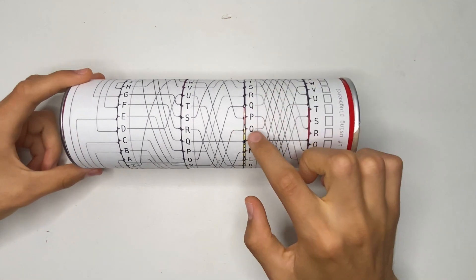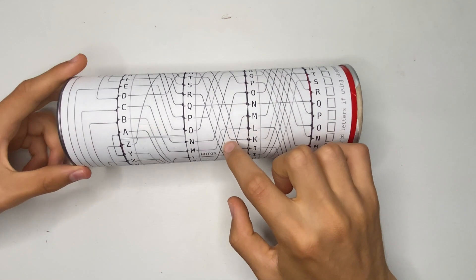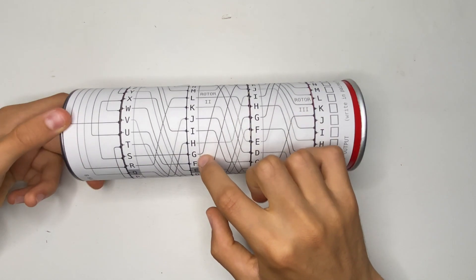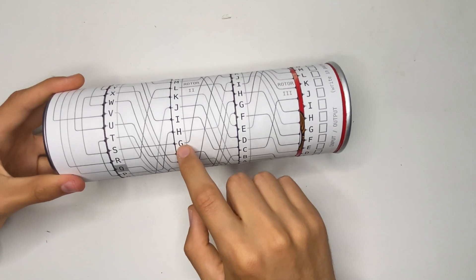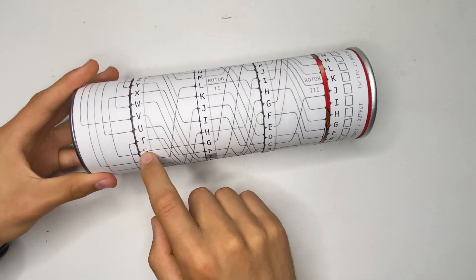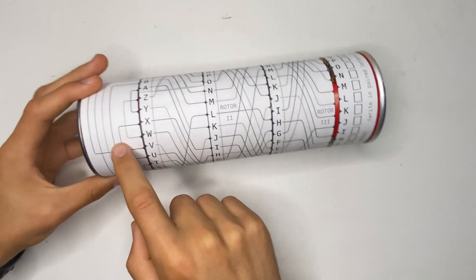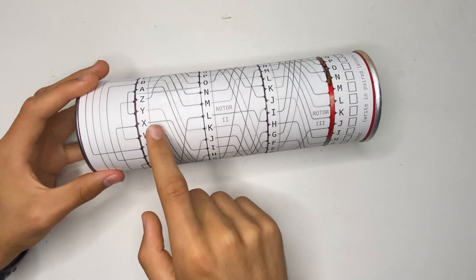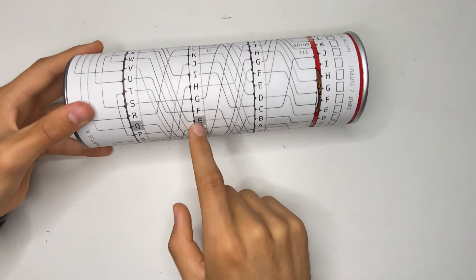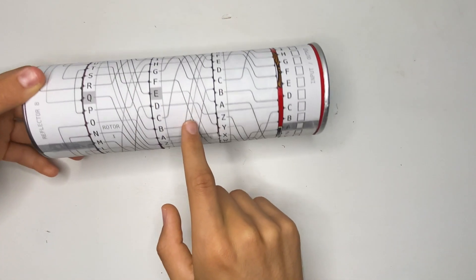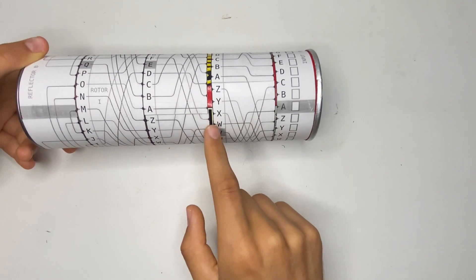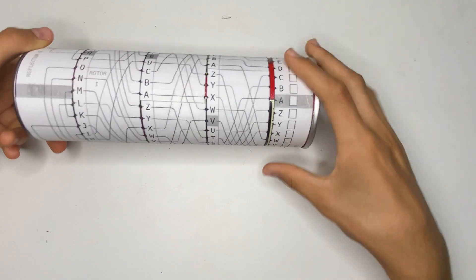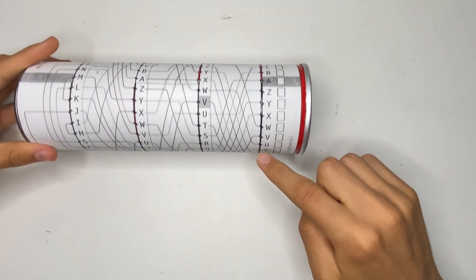And then we're going to go across here from O along the next rotor to G, to G. And then finally we go all the way to S. And we follow the reflector. We're going to go to X, back to E, down to W.